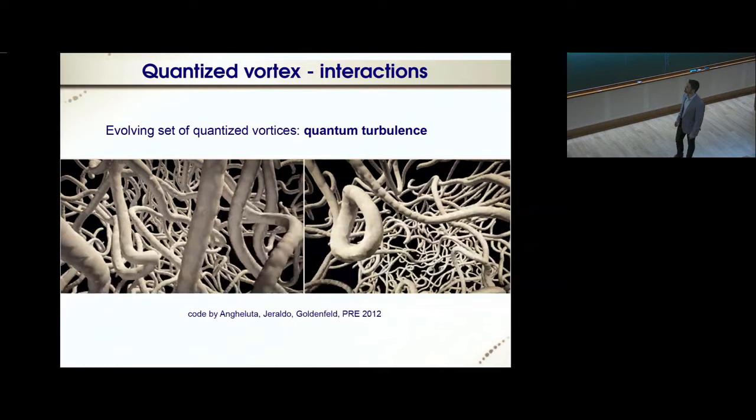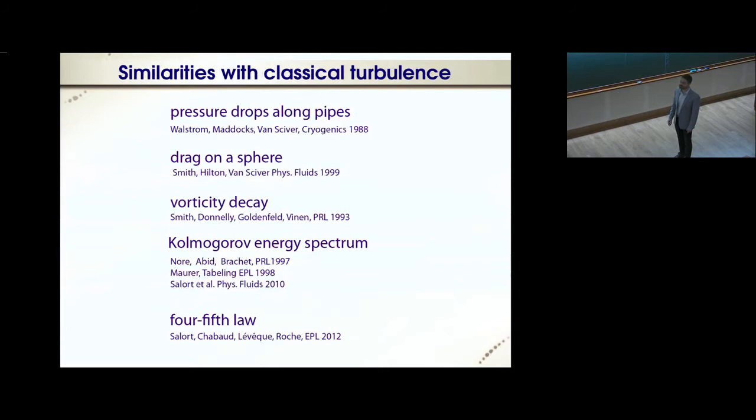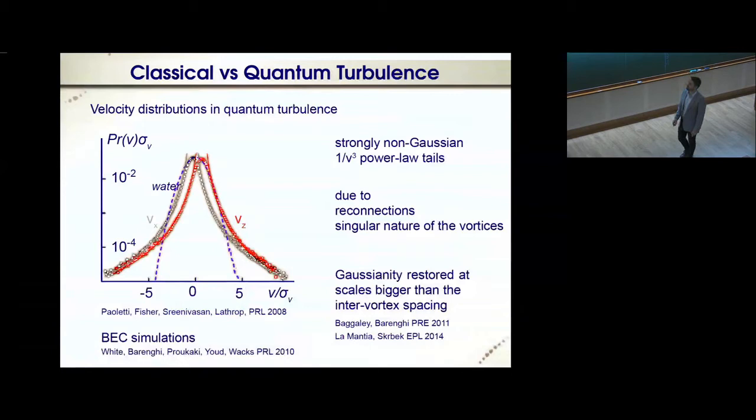Quantum turbulence has several similarities with classical turbulence. For example, the pressure drops along pipes, the drag on spheres, the vorticity decay, the Kolmogorov energy spectrum, and the four-fifths law are all in common with classical turbulence. However, there are important distinctions. For example, in the velocity distribution, quantum turbulence has strongly non-Gaussian one over cube power tails, as you can see from the plot.